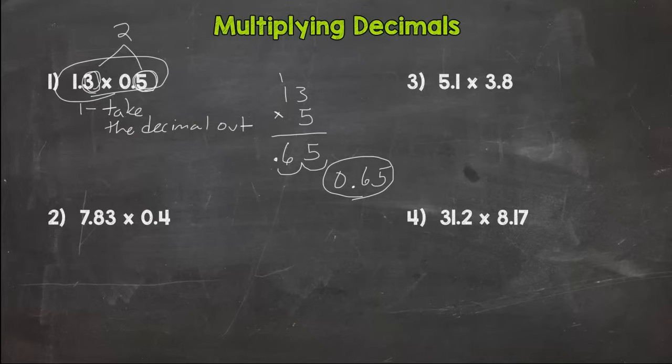So first step, take the decimal out. Go through your multiplication process. Second step, place the decimal back in your answer. Let's go to number two here. Take the decimal out. Let's just do 783 times 4. You don't need to worry about lining your decimals up or anything.